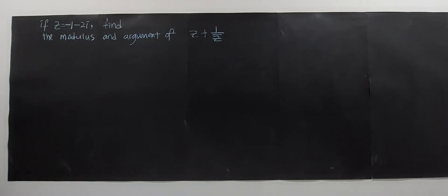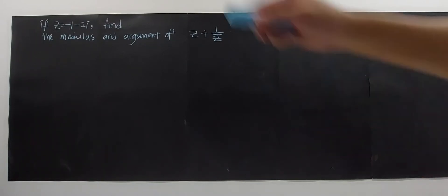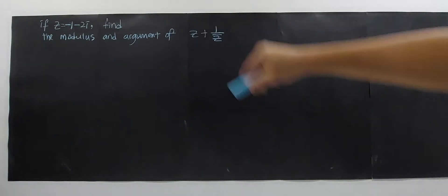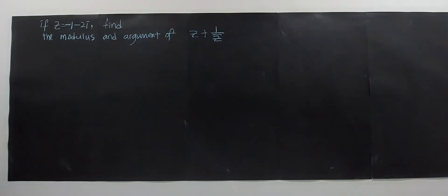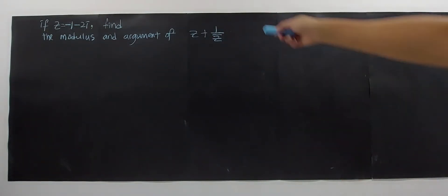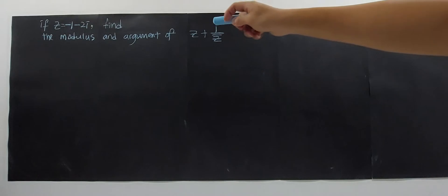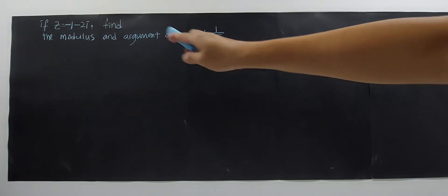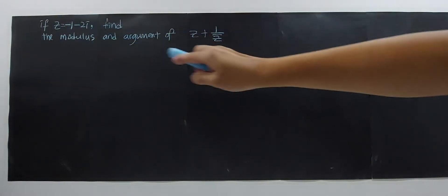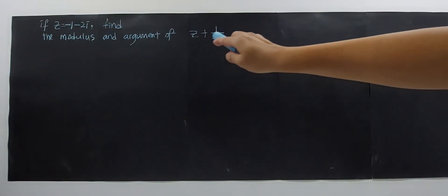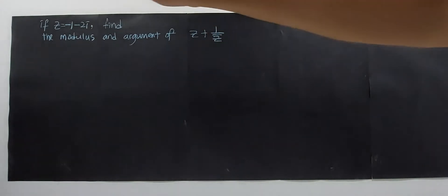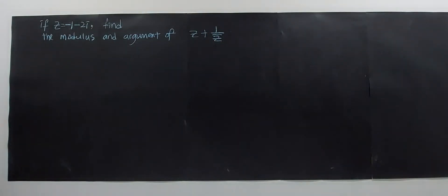This question requires us to find the modulus and argument of a complex number. Before that, we have to simplify. You must know that Z here is the complex number, and bar Z stands for the conjugate of this complex number.